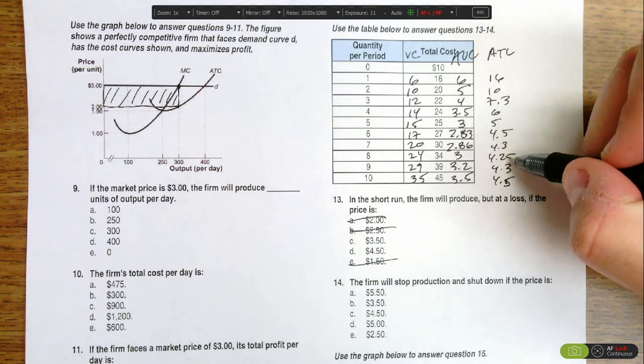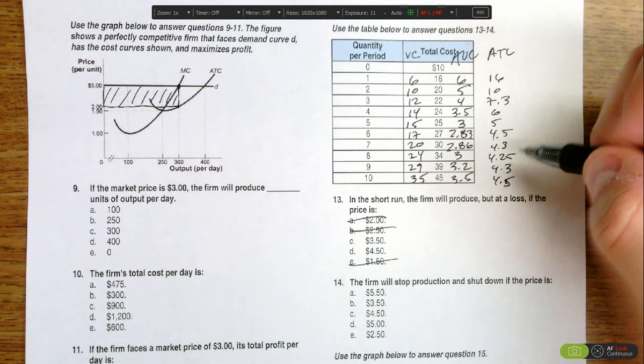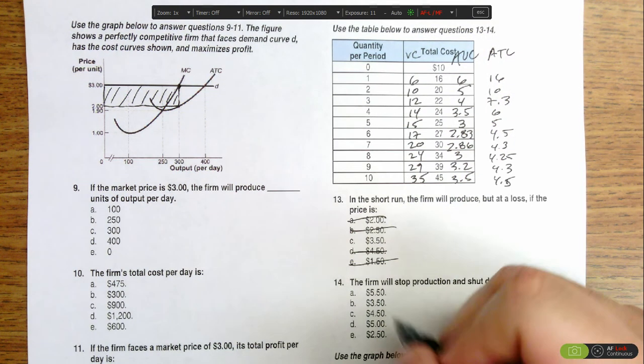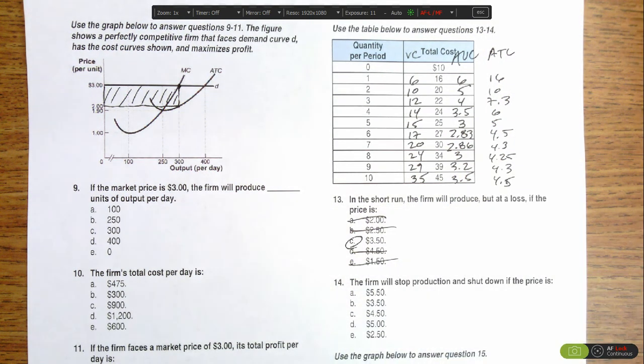So the price has to fall between the shutdown price of $2.83 and $4.25. Option D would be operating at a profit, so we're left with option C as the only one where the firm would produce at a loss.